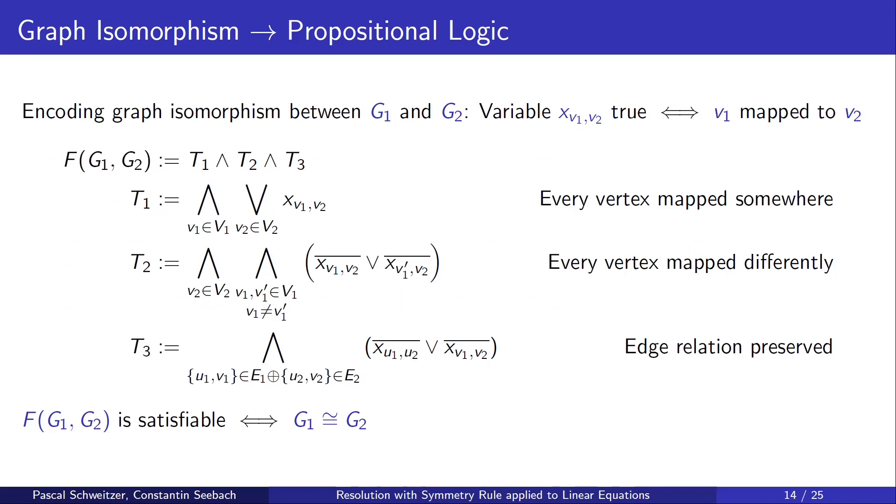A key idea is encoding problems into propositional logic. This can also be done for graph isomorphism. Basically, we introduce variables which represent the mapping of vertices. Then we generate clauses which ensure that this mapping is a bijection and also we make sure that this mapping preserves the edge relation. Together, this means that this formula is satisfiable if and only if the graphs are isomorphic.